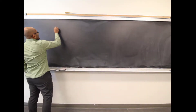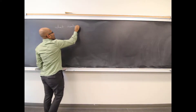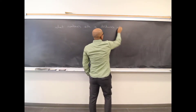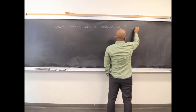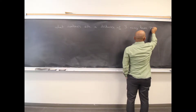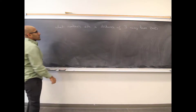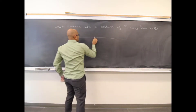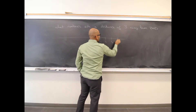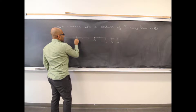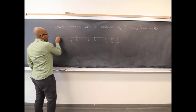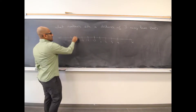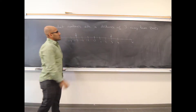Let's think about this. What numbers are a distance of 3 away from 0? We can think of it on the number line. Here's 0, 1, 2, 3 in one direction, and negative 1, negative 2, negative 3 in the other. So on a number line with x, the numbers a distance of 3 units away from 0 are 3 and negative 3. Those are the two results.